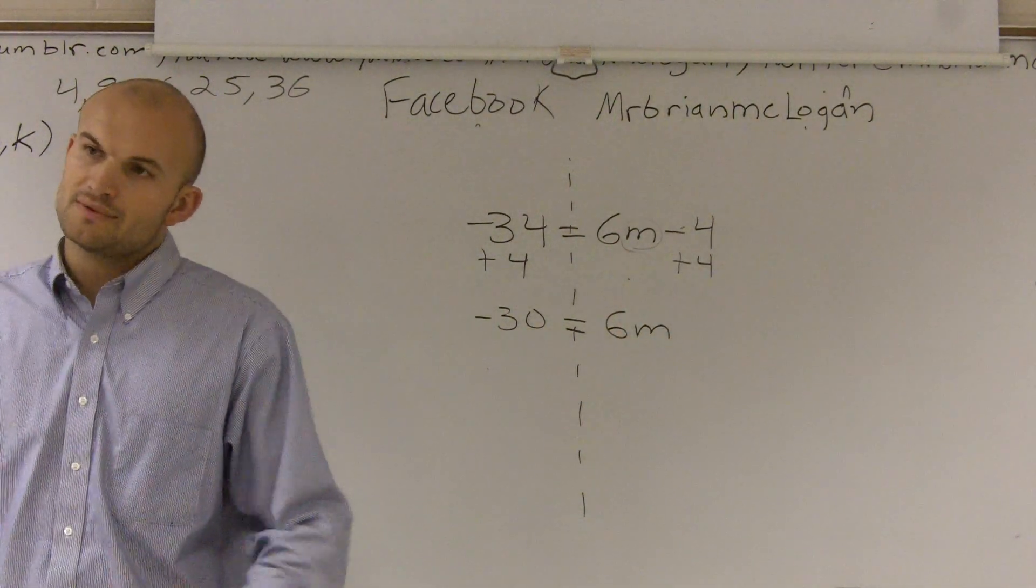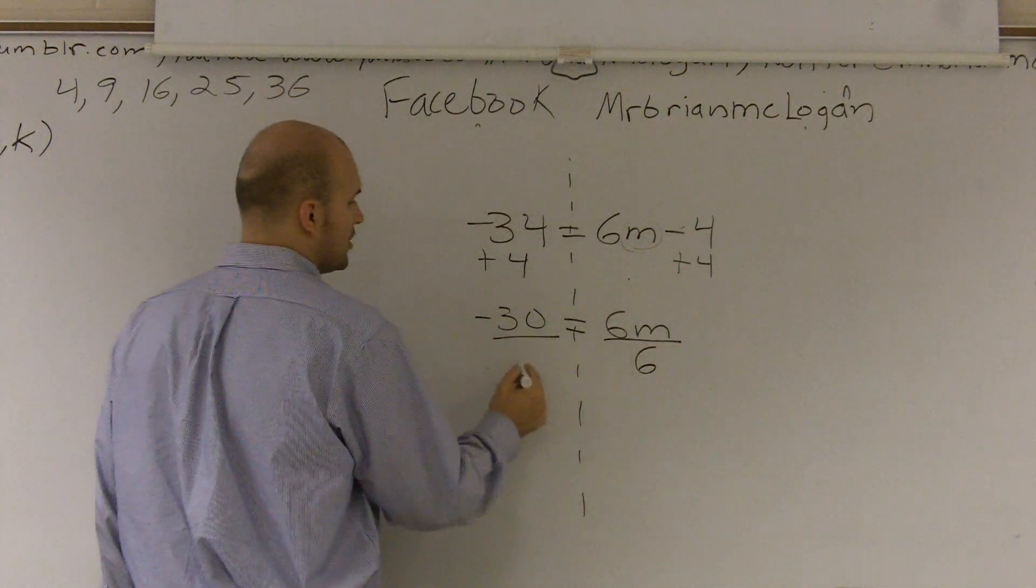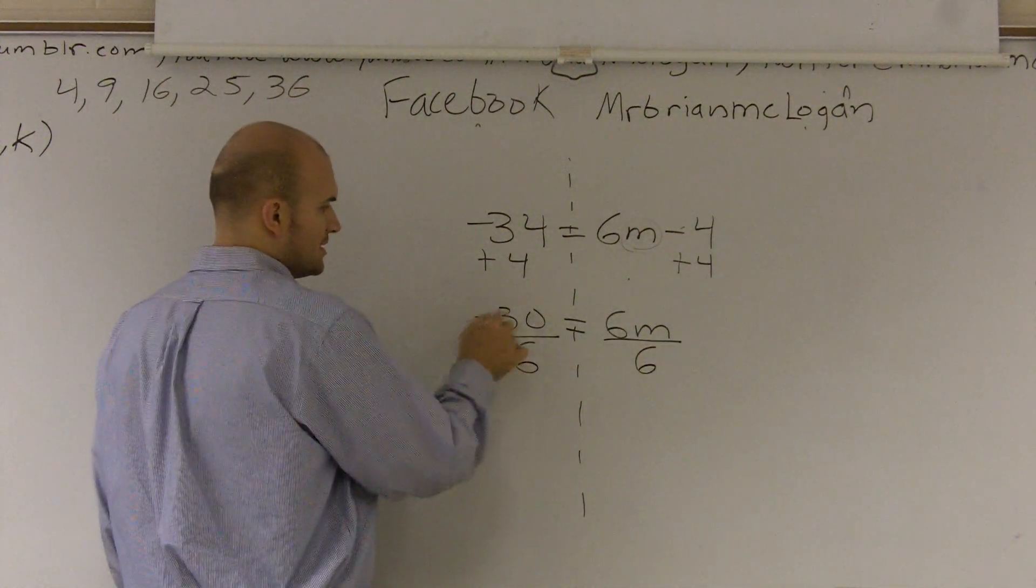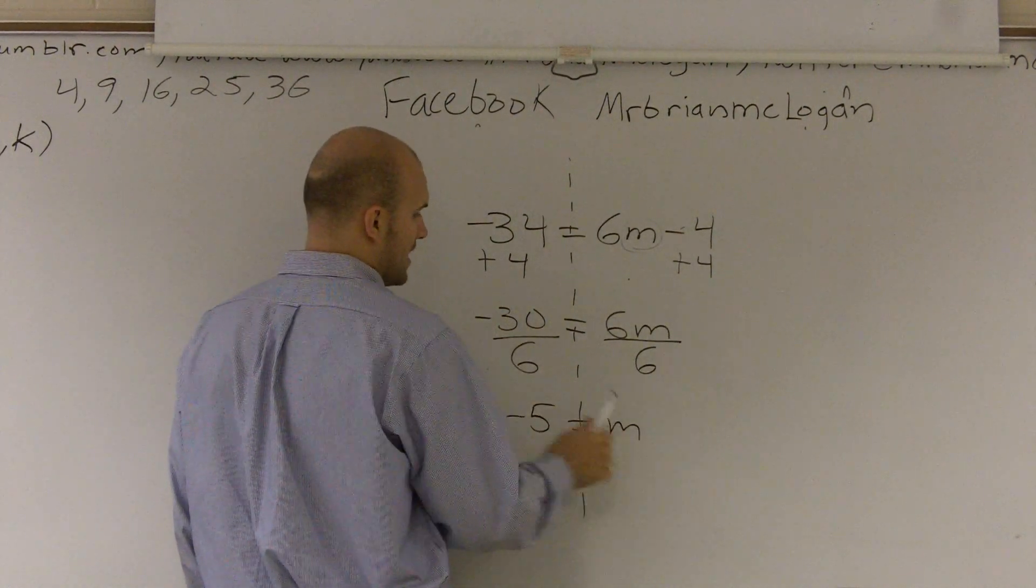Now we look at our variable and say what's happening to our variable. It's being multiplied by 6. So I have to undo multiplication, which is division. Negative 30 divided by 6 gives you a negative 5 equals m.